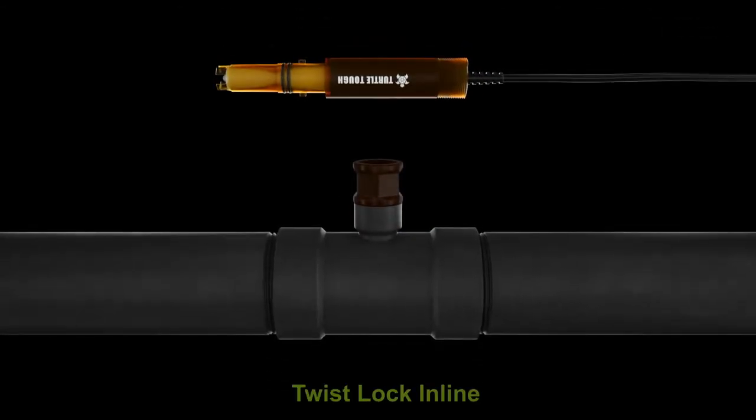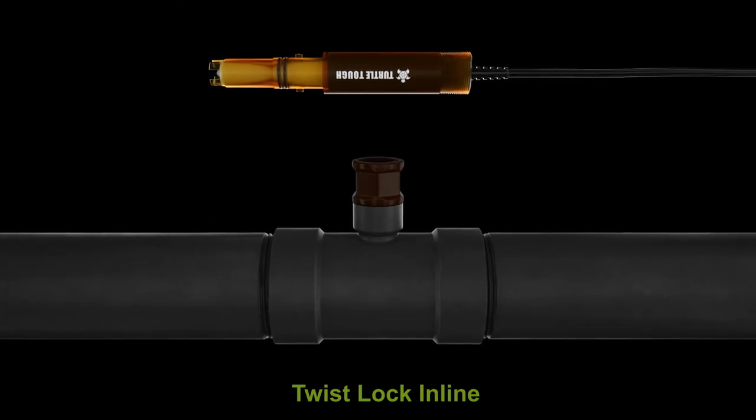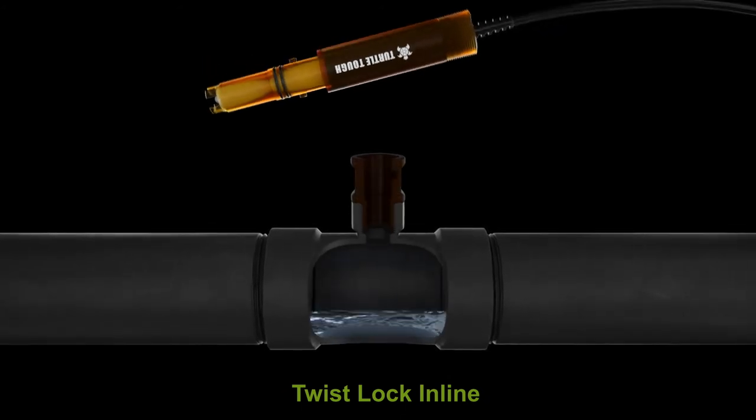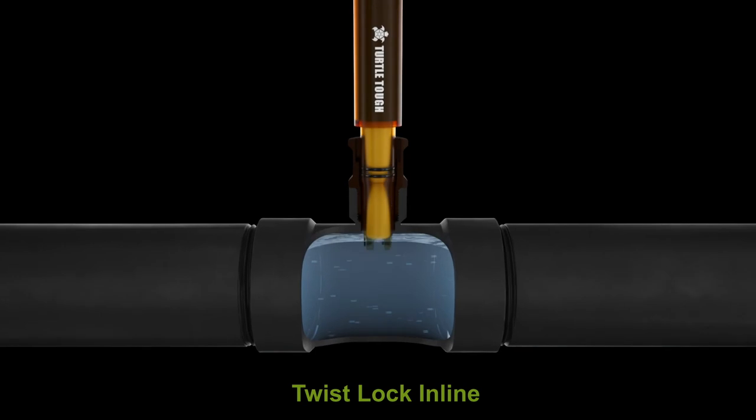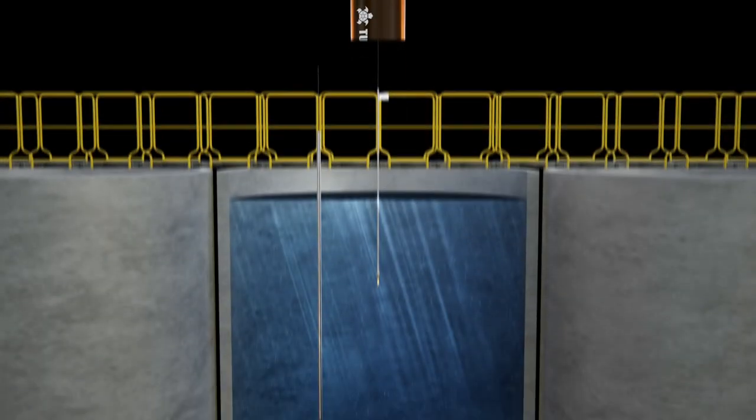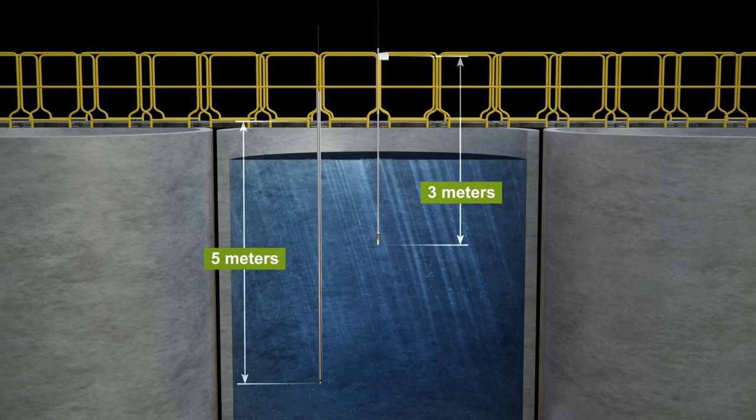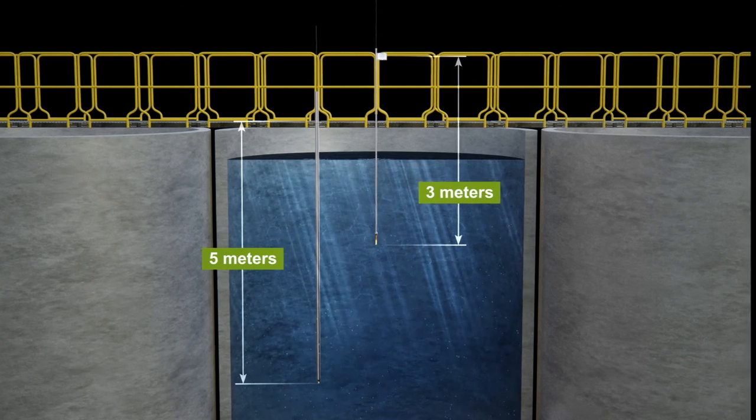The Twist Lock quick disconnect installation assembly allows for rapid insertion and removal of the sensor in inline applications at pressures up to 100 PSI-G. Turtle Tough installation hardware has been designed for easy, convenient measurement in extreme environments.